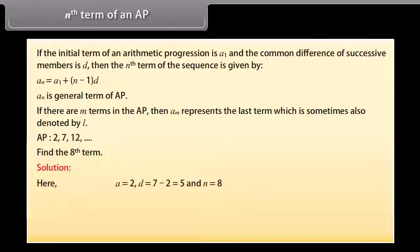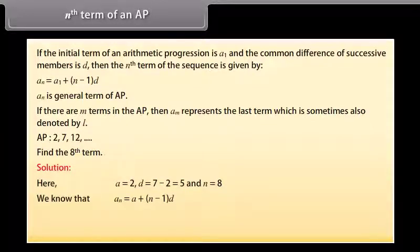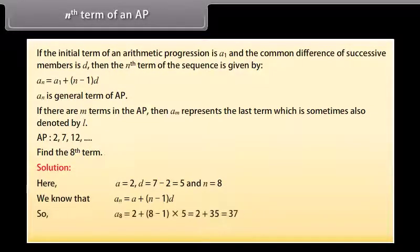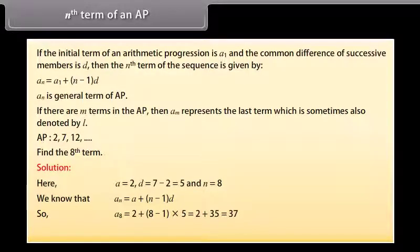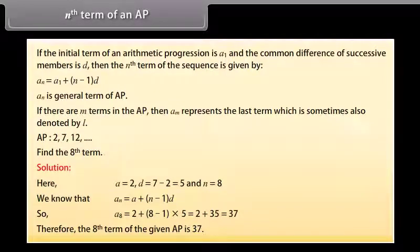Here a equals 2, d equals 7 minus 2 which is 5, and n equals 8. We know that an equals a plus (n minus 1) times d. So a8 equals 2 plus (8 minus 1) times 5, which equals 2 plus 35, which equals 37. Therefore, the 8th term of the given AP is 37.